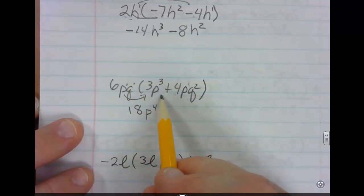Now since there's no q here, you could put q to the 0 power and then multiply it with q to the first, and you get 0 plus 1, which is going to give you q to the first. So the q just comes along for the ride.